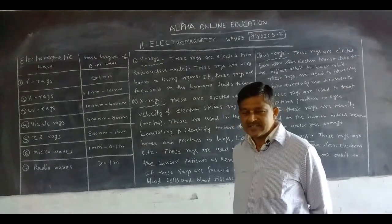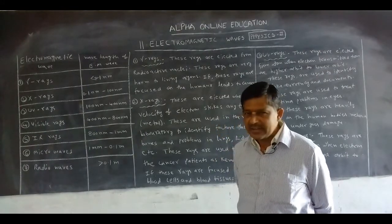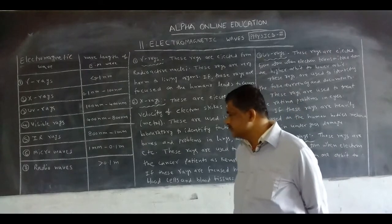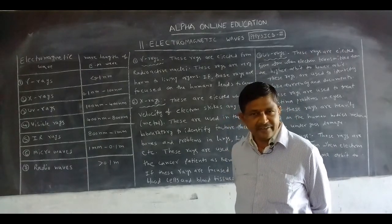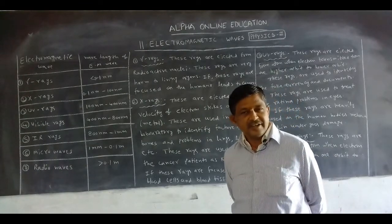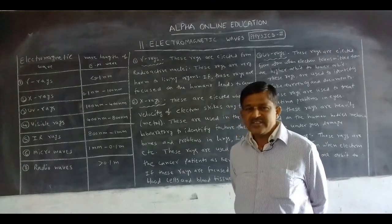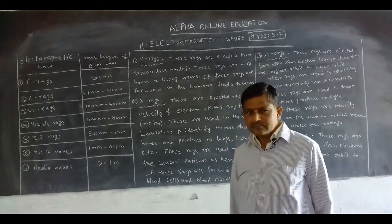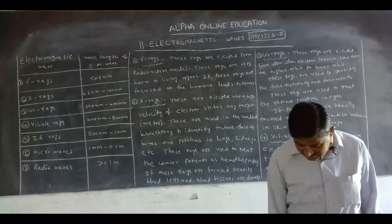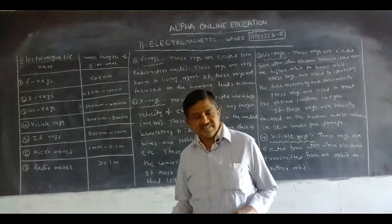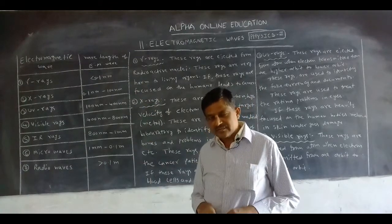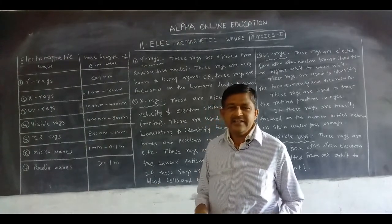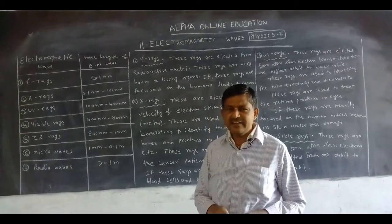Infrared rays also do not deviate in an electric field or magnetic field; velocity is 3 × 10⁸ m/s. Microwaves also do not deviate in electric or magnetic fields, velocity 3 × 10⁸ m/s. The last one is radio waves — these waves also do not deviate in electric or magnetic fields. All electromagnetic waves have the same velocity: 3 × 10⁸ meters per second, and all are not deviated in electric or magnetic fields.